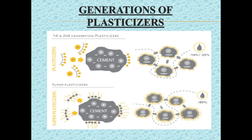Polysulphonates such as naphthalene and melamine are the second generation plasticizers that reduce water-cement ratio to around 25%. They have a similar working mechanism to the first generation plasticizers, delivering an electrical dispersion effect. The polycarboxylates, or high range water reducers — the superplasticizers — are the third generation plasticizers. These superplasticizers reduce the water-cement ratio to about 40%.